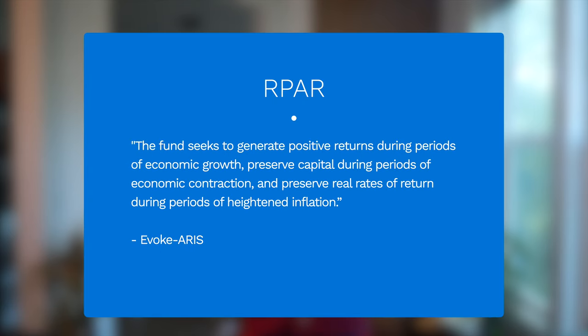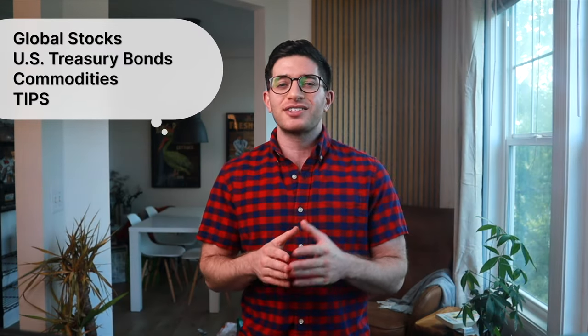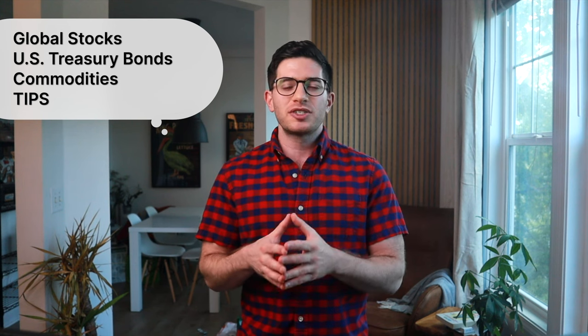Basically, this ETF is a single investable fund that holds multiple funds across different asset classes to arrive at an all-weather strategy. In their words, the fund seeks to generate positive returns during periods of economic growth, preserve capital during periods of economic contraction, and preserve real rates of return during periods of heightened inflation. To do that, RPAR holds global stocks, US treasury bonds, commodities, and TIPS in risk-parity allocations and rebalances quarterly.